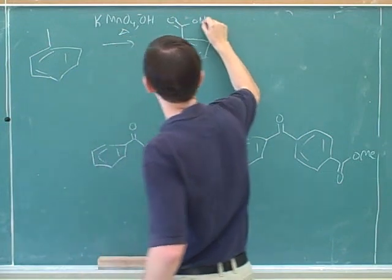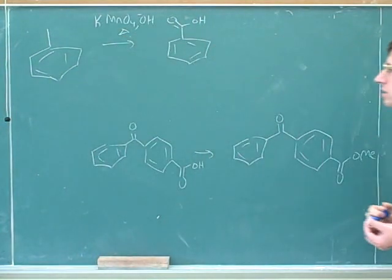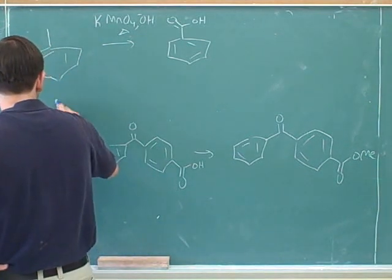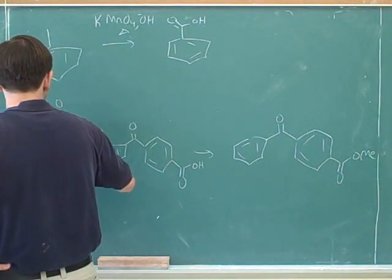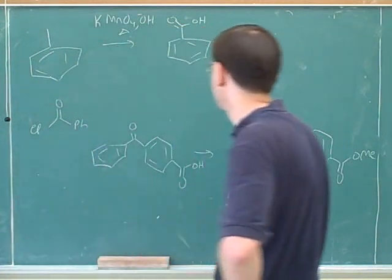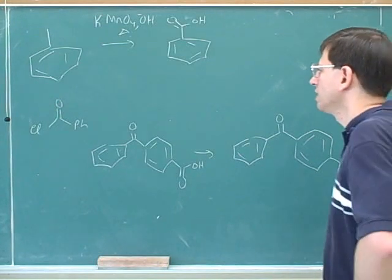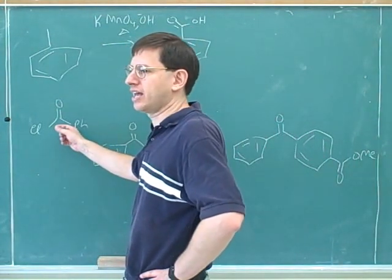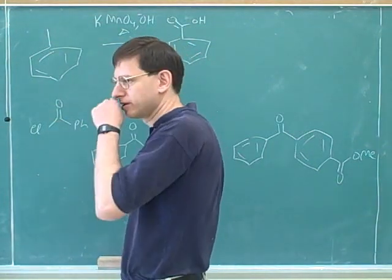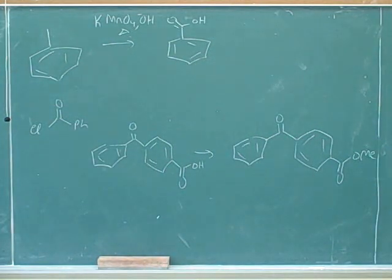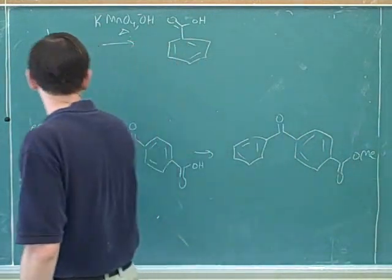A student asks: why can't we just add a phenyl group through alkylation? The instructor responds: they just want you to form it first. It seems perfectly reasonable — we could add this group here, and technically the instructions don't say you can use a minimum number of starting materials. So yes, that would work.